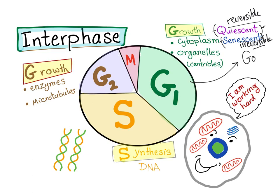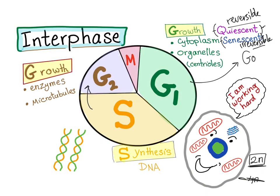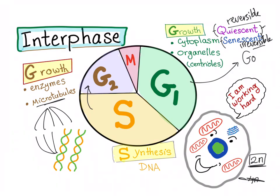However, the ploidy of the cell did not change. So if the cell was 2N, we will still call it 2N — the ploidy is still the same. Then after the S phase, there is the G2 phase. Again, protein synthesis, the cell grows, formation of more enzymes — because enzymes are proteins. We are preparing for mitosis, so we form microtubules, which will form the mitotic spindle, which is another topic covered in the mitosis video.